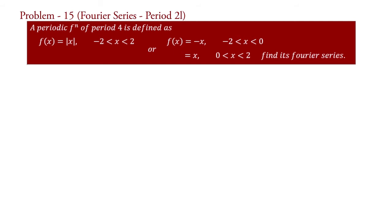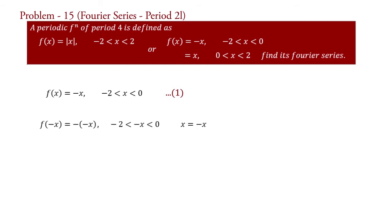We have given that f(x) = −x for −2 < x < 0, say equation 1. Take x equal to −x. Therefore f(−x) = −(−x) for −2 < −x < 0. We can write this interval as 2 > x > 0, because its meaning is not changed if we change the sign of inequality and signs of quantities simultaneously.